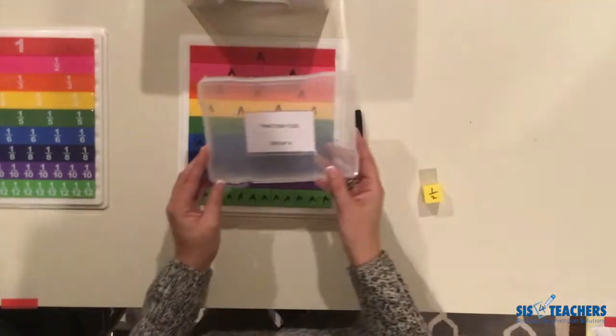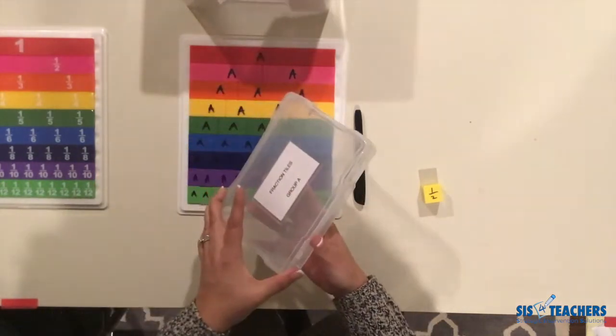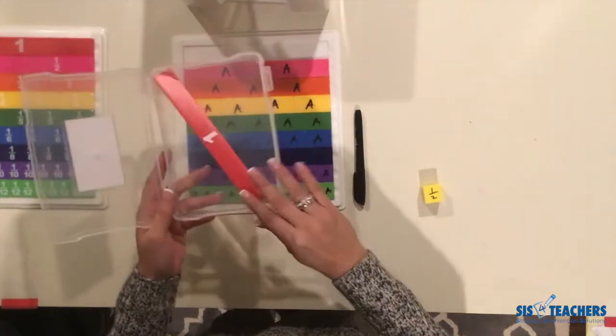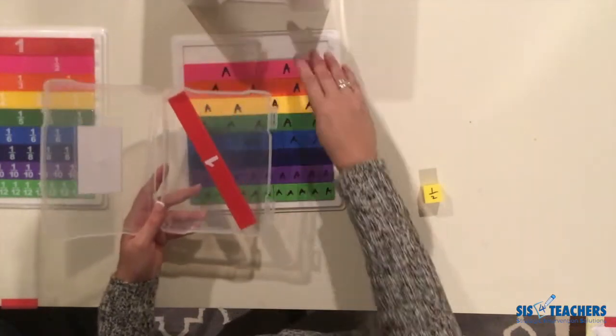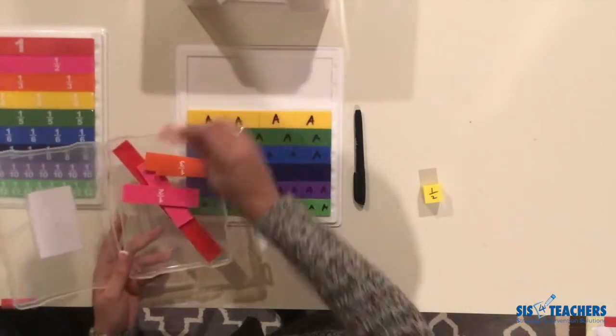The one thing about the 5x7 box that's unique versus the 4x6 box that we use for the Place Value strips and discs is that the hole fits in there perfectly. So as we start to put these different fraction tiles inside of our fraction tray, they all fit in there.